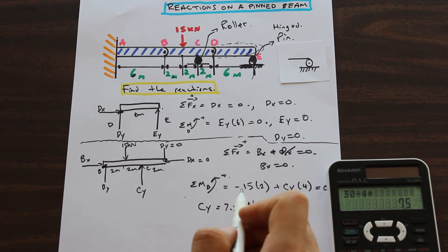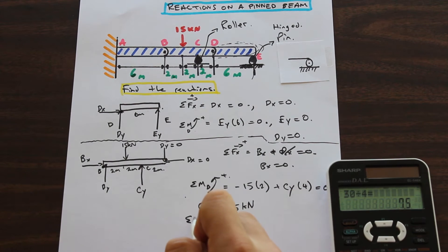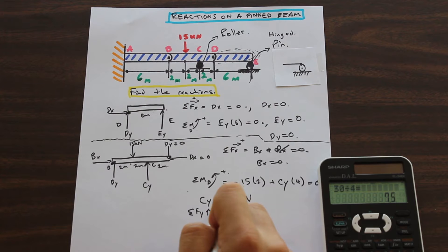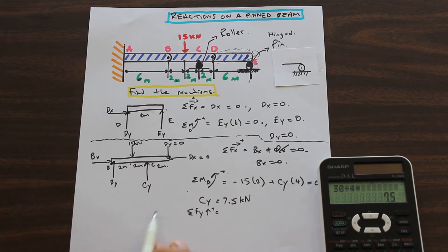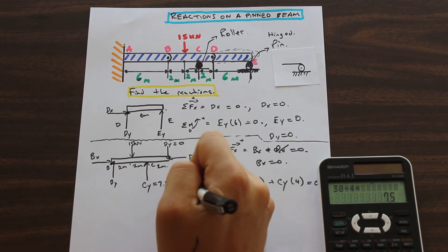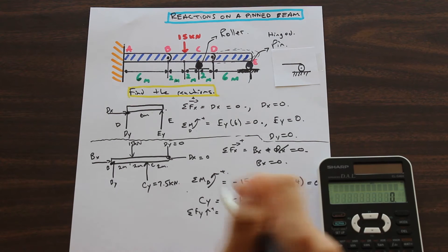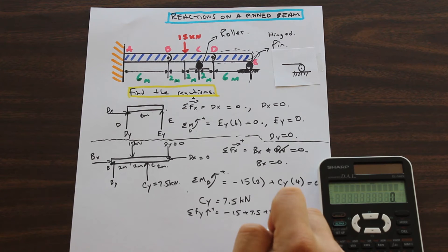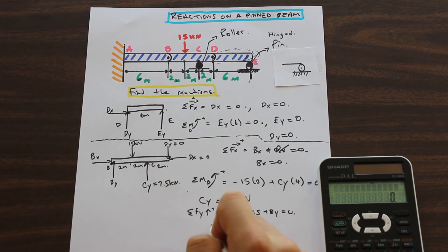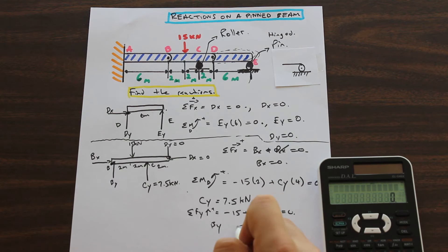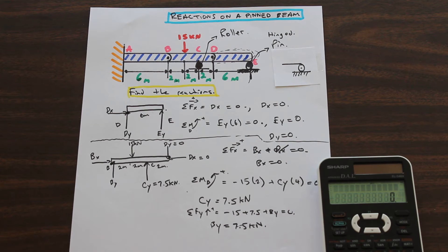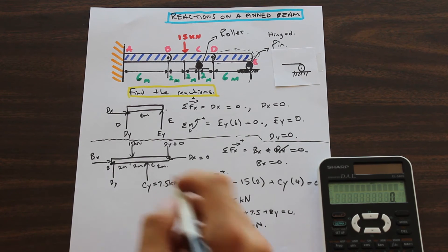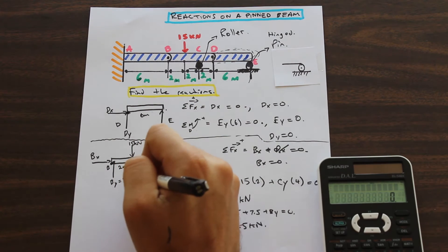Now let's take the summation of forces in the Y direction, where up is positive. We have negative 15 plus 7.5 plus BY equals zero, and that gives us BY equal to 7.5 kilonewtons. So they're both equal. BY is equal to 7.5 kilonewtons.